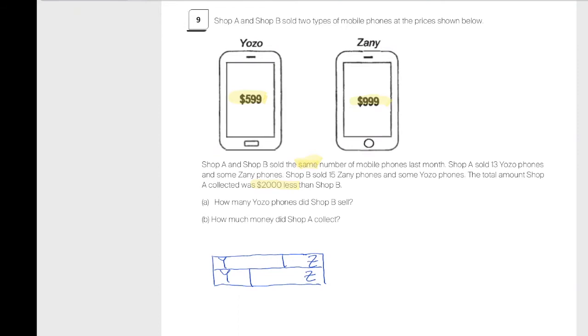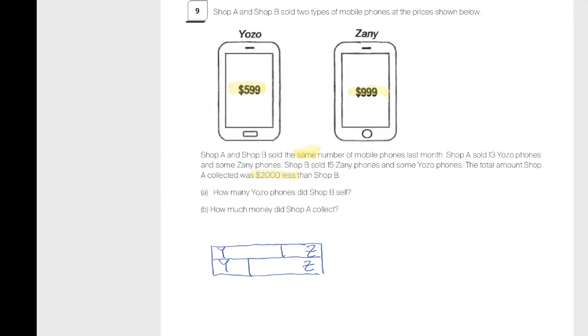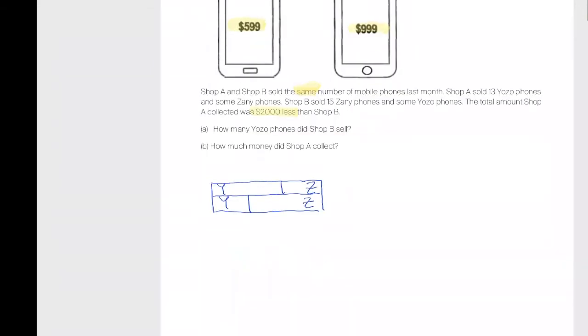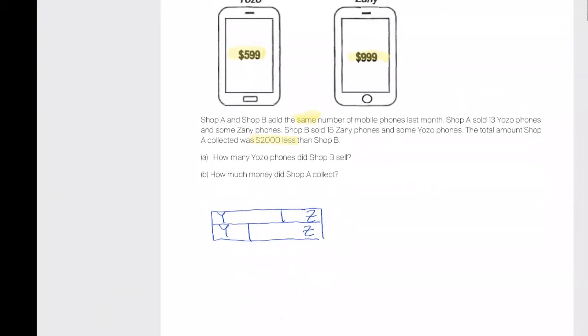Achimau, let me ask you. If A collected $2,000 less, which is A, the top or the bottom model? They sold the same number, but A collected $2,000 less. If A collected $2,000 less, would A have sold more Y or sold fewer Y? That's how we decide whether it's the top or the bottom model.